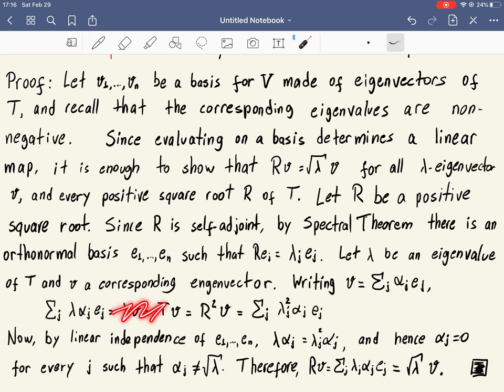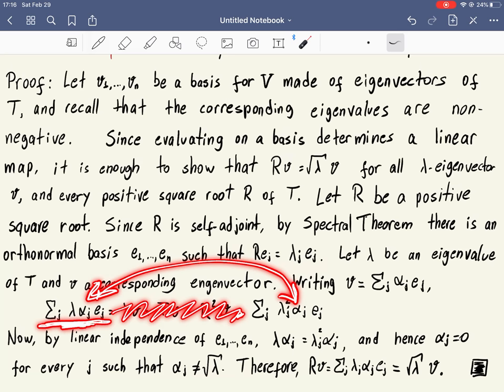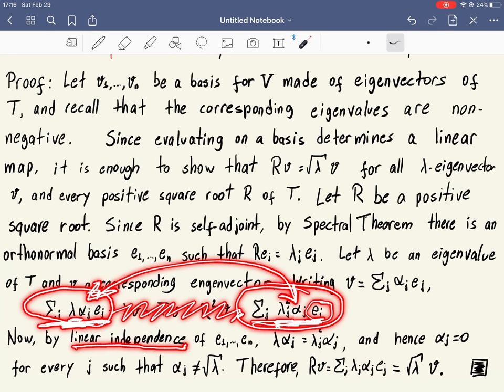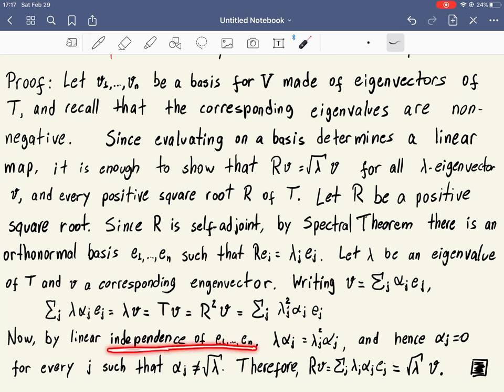So now let's forget everything that is in between. What we have is these two vectors are the same. Again, which vector, this linear combination of this basis EJ, and this other linear combination of these vectors EJ. However, these EJs, they are linearly independent. And if a linear combination of them equals another linear combination of them, then each coefficient in the linear combination has to be equal. So, by linear independence of these vectors, each coefficient, this one here and this one here, is equal for every J. Now, how can these two things here be equal? Well, either the lambdas are equal or the alpha is zero.